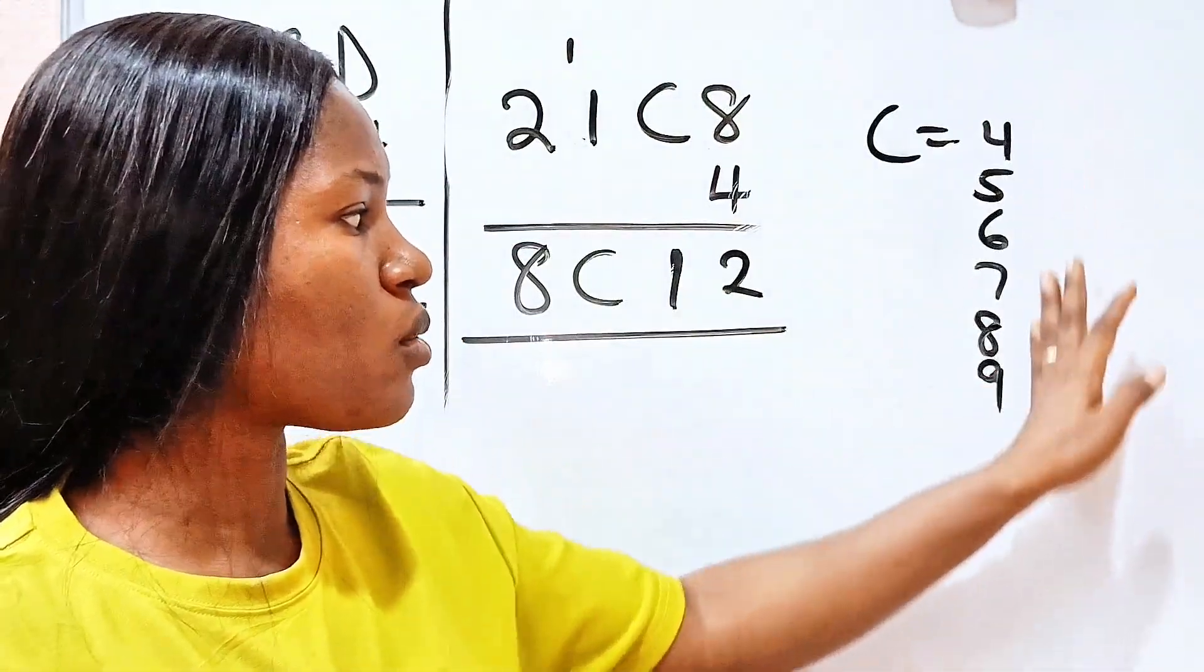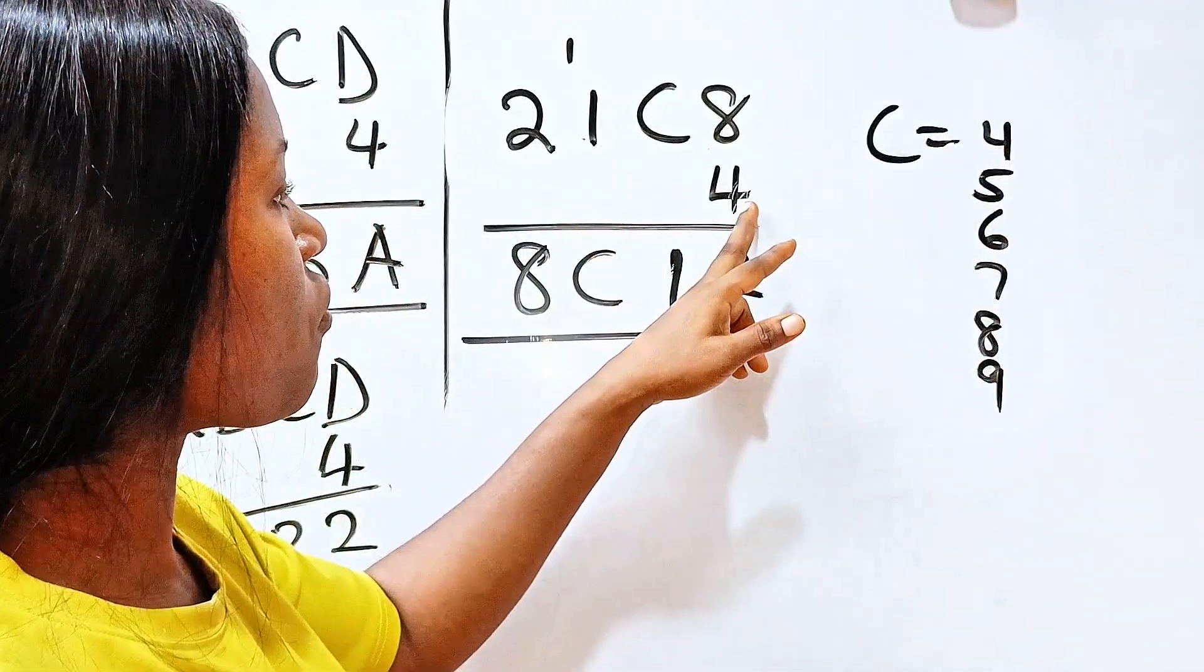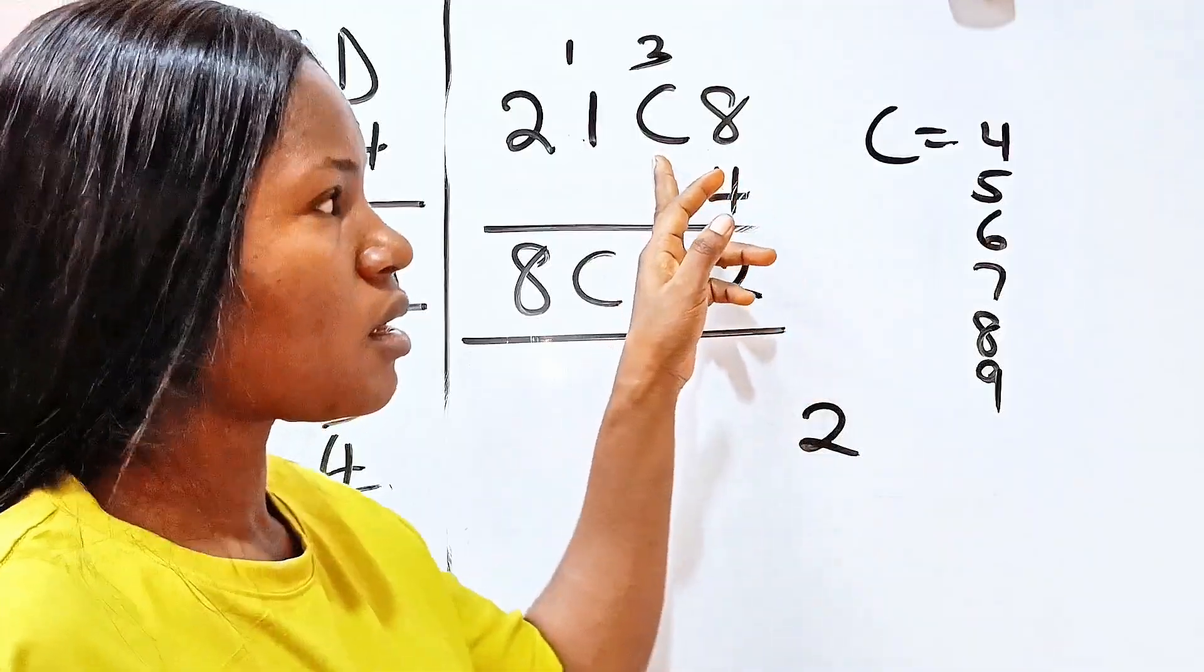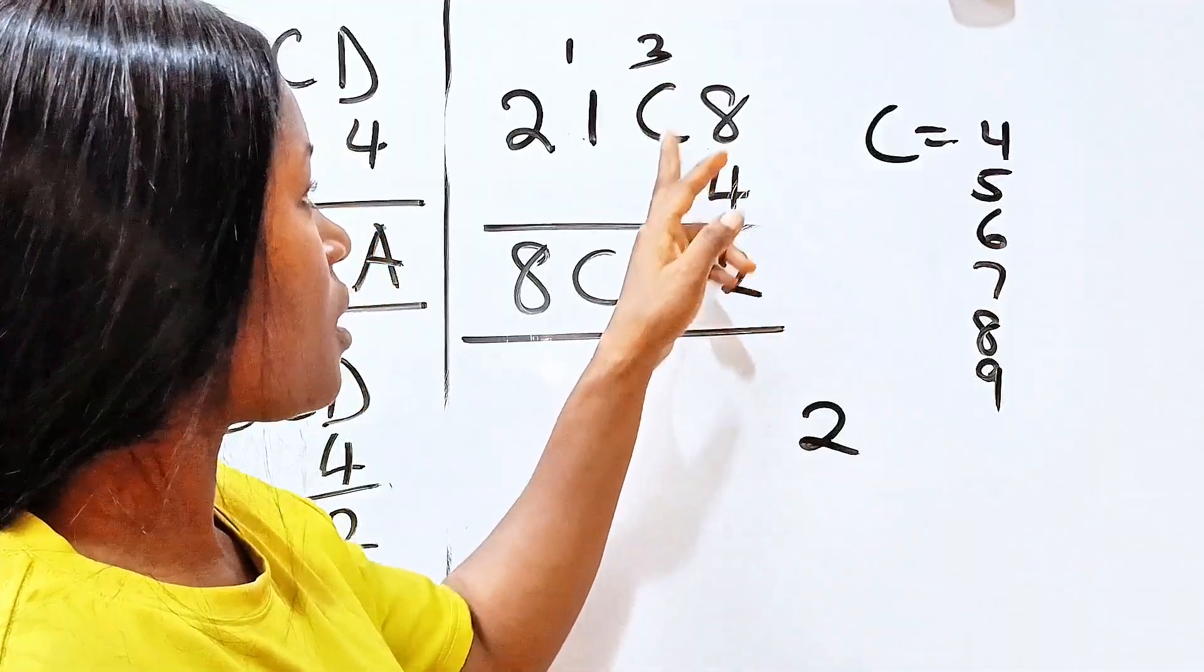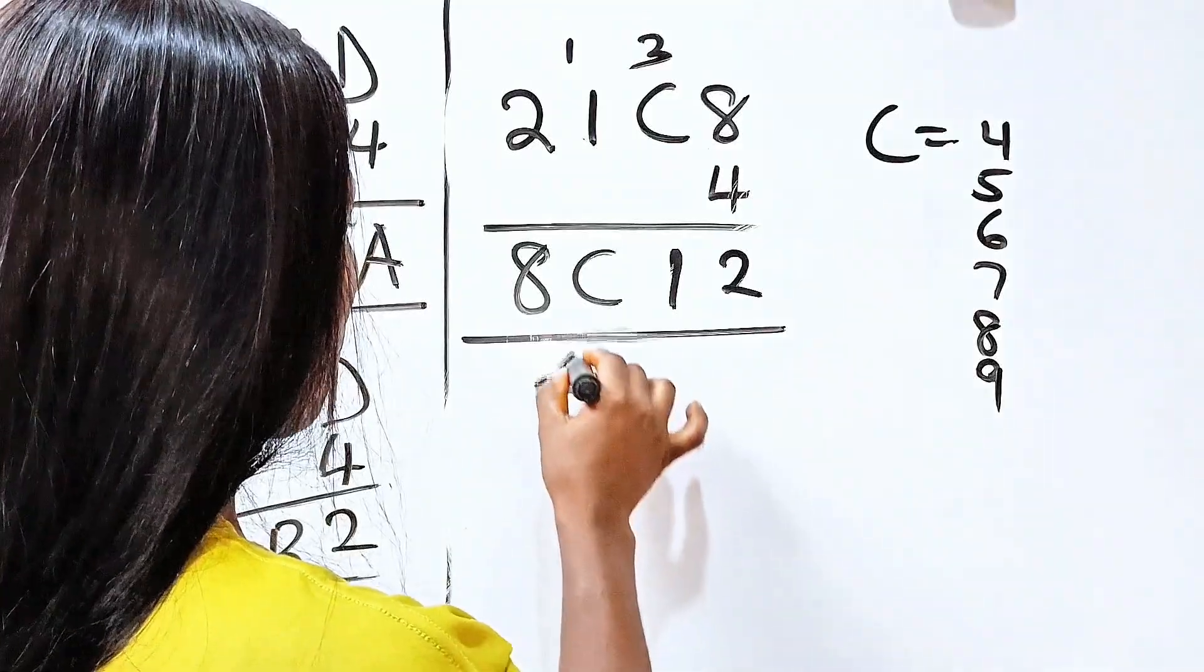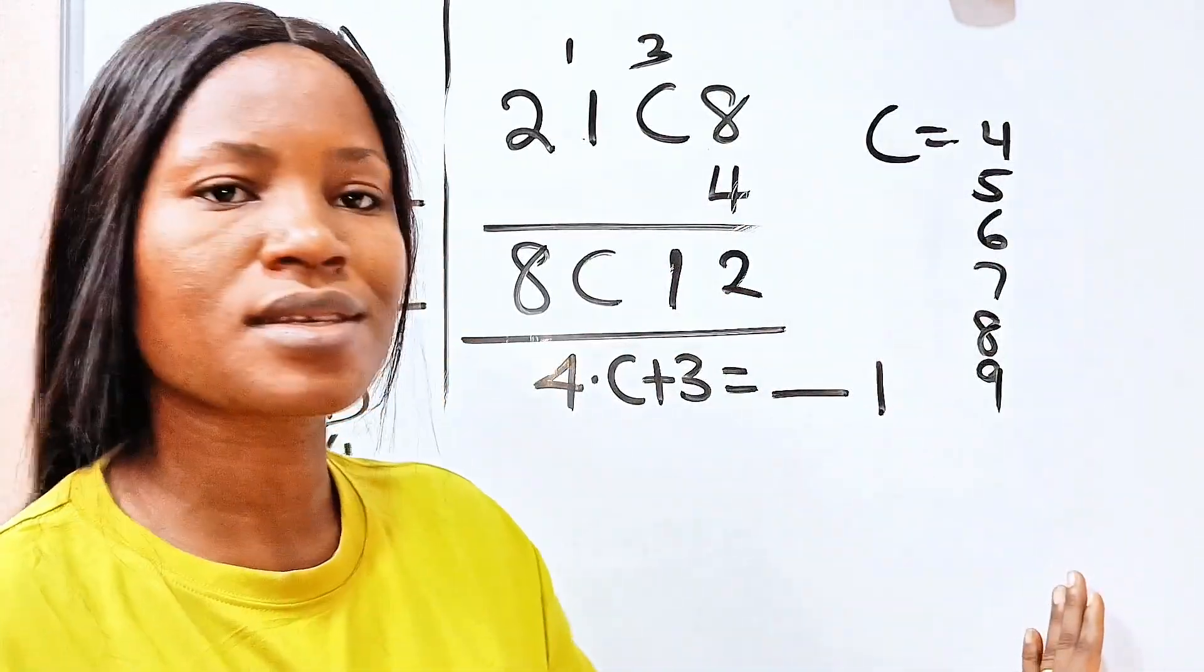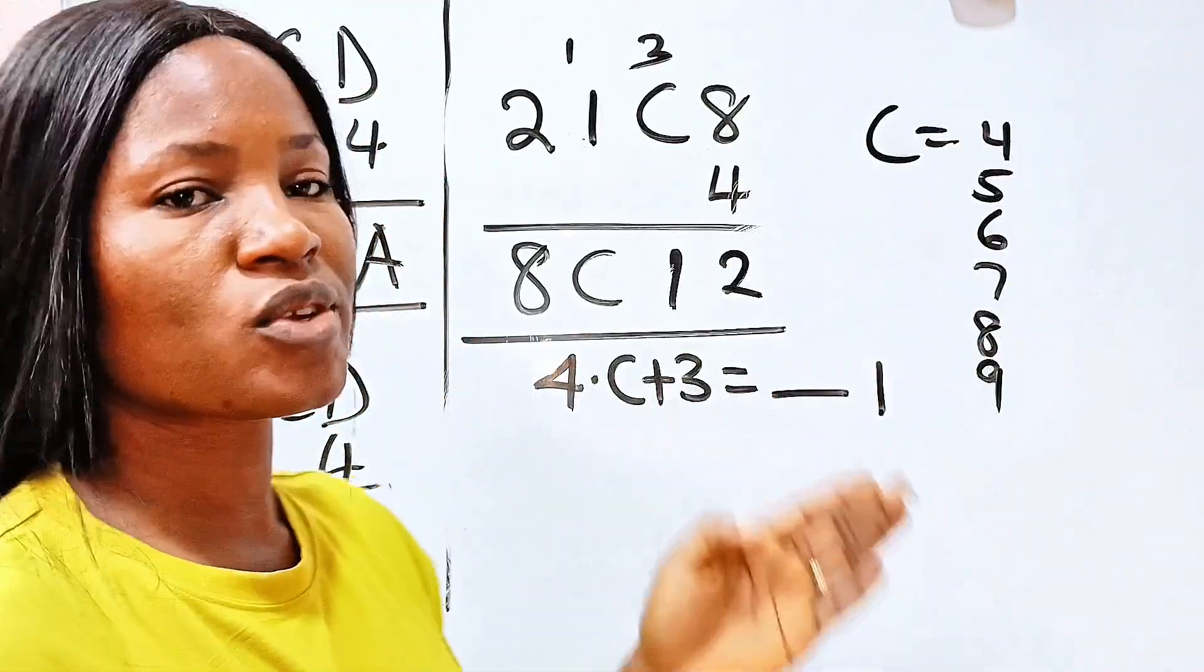But there is something we have that will clarify which of them is actually the value of C. Now remember that we have 4 times 8, we got 32. So we wrote 2 and carried 3. So 4 times C plus 3 will give us a number that ends with 1. So we are going to check which of these numbers will give us a number that ends with 1 when we multiply it by 4 and add 3 to it.